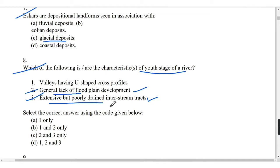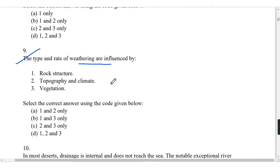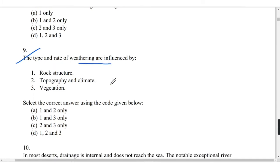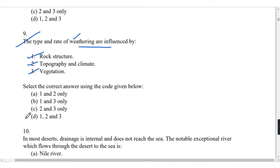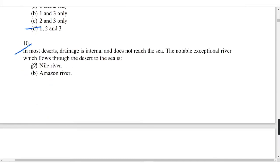What are the type and the rate of weathering influenced by? It will be influenced by all three: rock structure, topography and climate, and vegetation will also influence.